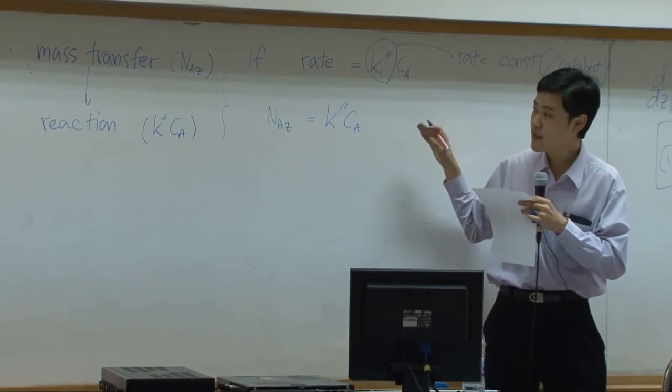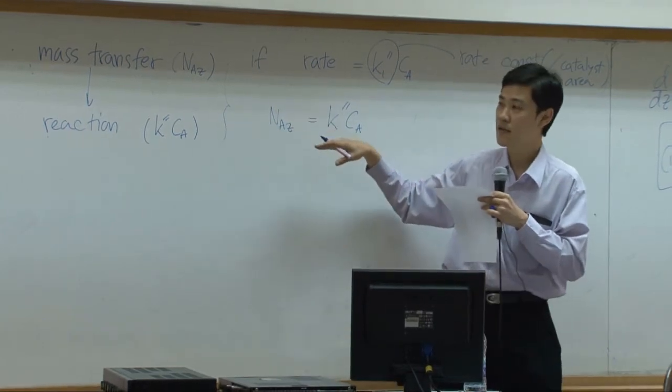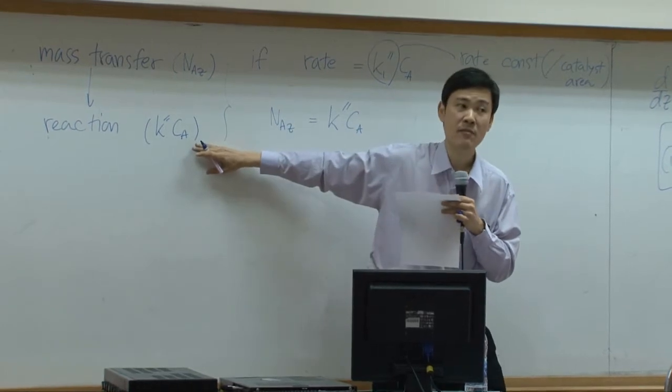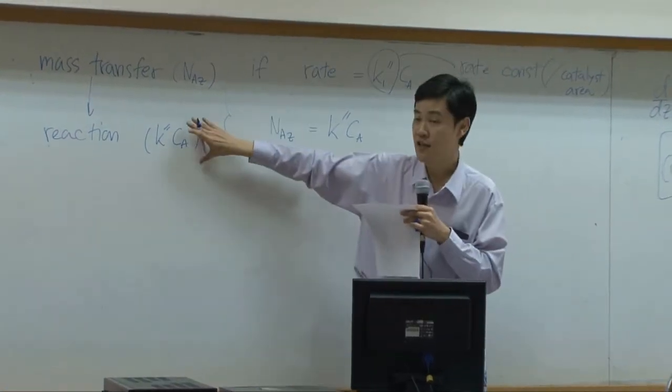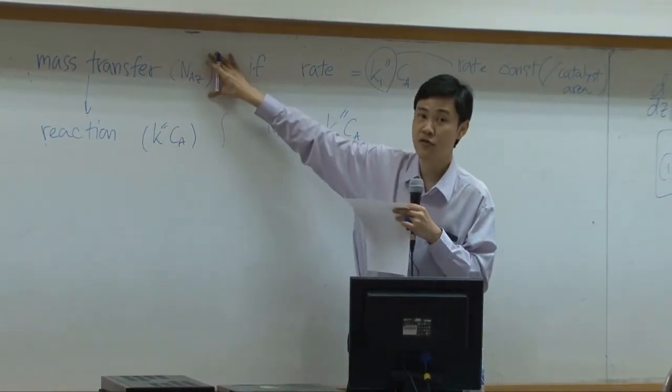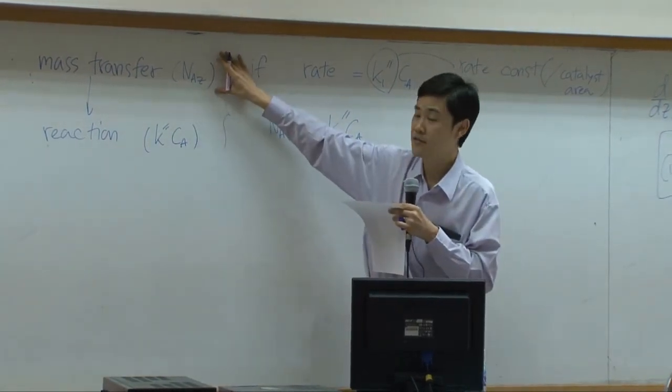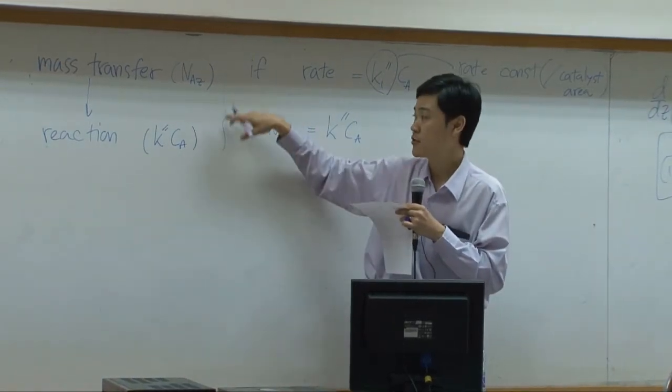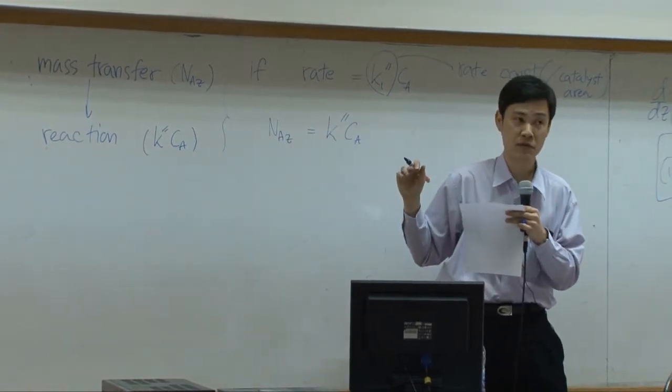For this particular problem, when you have both rates to be determined, the reaction is not extremely fast like earlier. Earlier, the reaction was extremely fast so this rate can be neglected. For mass transfer kinetics, this one is extremely fast so you neglect this one. But for this problem, these two are somewhat in the same magnitude, so you need to consider both.